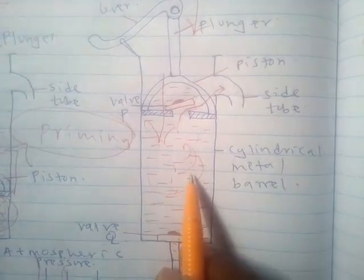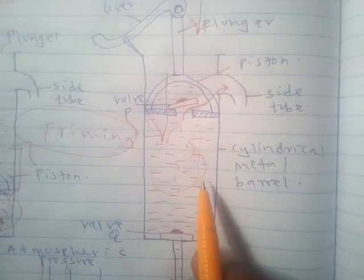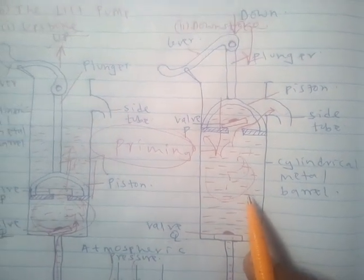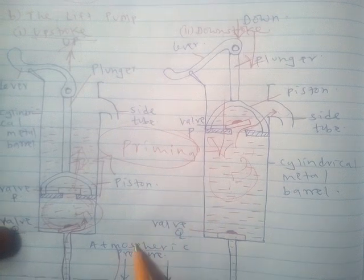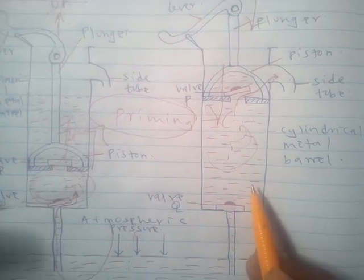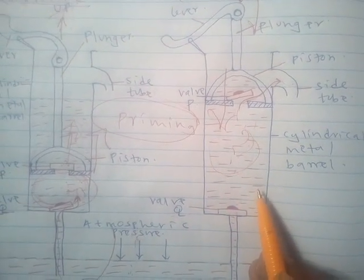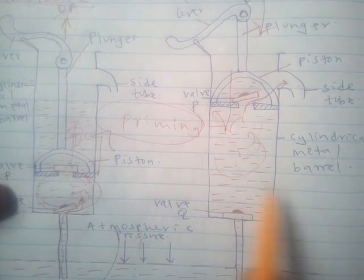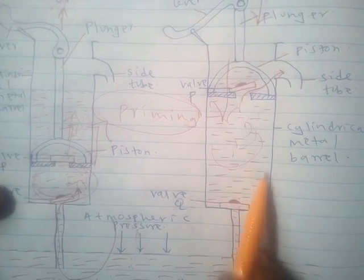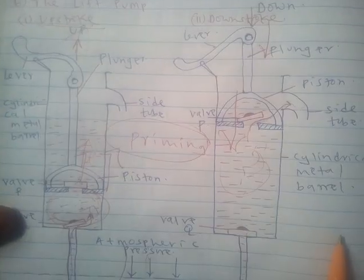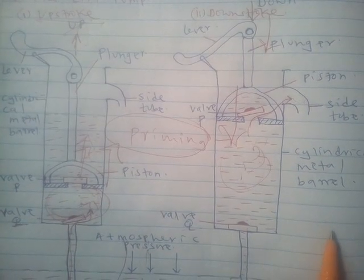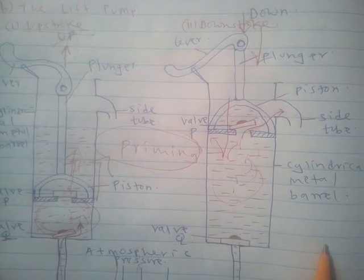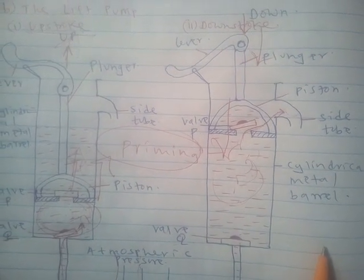A lift pump has a disadvantage: it cannot raise water above 10 meters. This is because it relies on atmospheric pressure, and the barometric height for water is 10 meters at sea level. So if you want to raise water above 10 meters, a lift pump will not help.